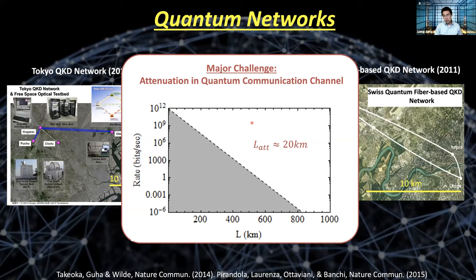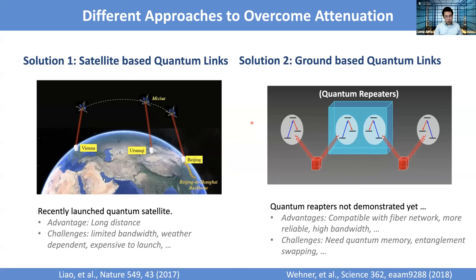There are two approaches. One is satellite-based quantum links — a pioneering experiment by Jianwei Pan's group in China, who launched a satellite around 2016. After one year of collecting data, they claimed they could send secret keys via satellite. The nice thing about satellites is that on Earth we have atmosphere that absorbs photons, but in outer space it's essentially vacuum, so photons aren't absorbed. The satellite can relay between ground-based telescope stations or between different satellites for even longer distances.